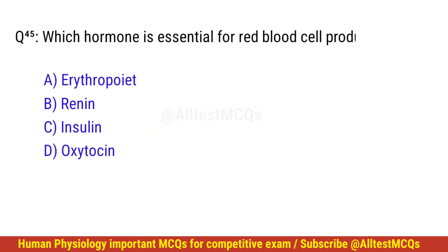Question number 46. Which hormone is essential for red blood cell production? The right option is A: Erythropoietin.